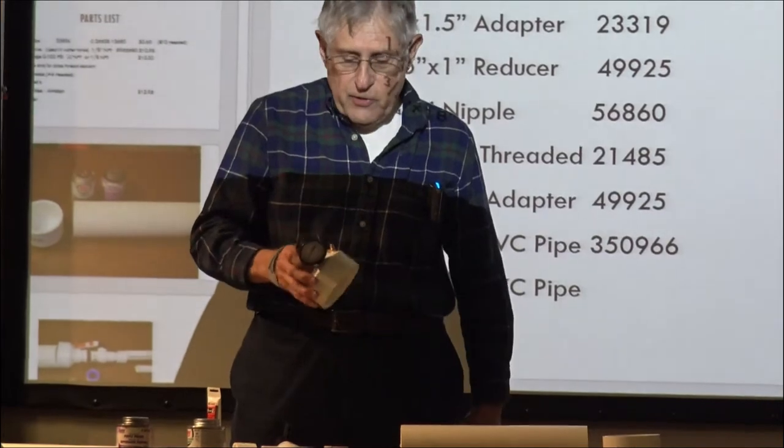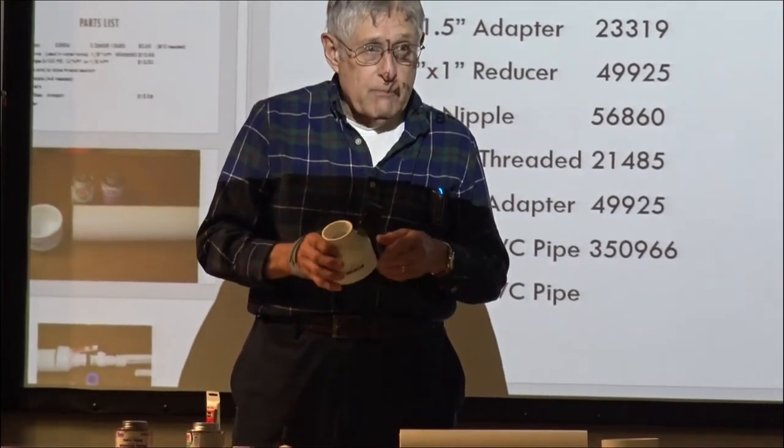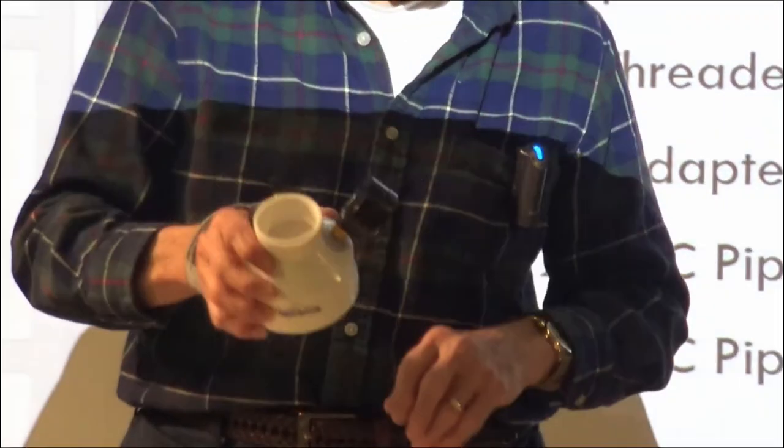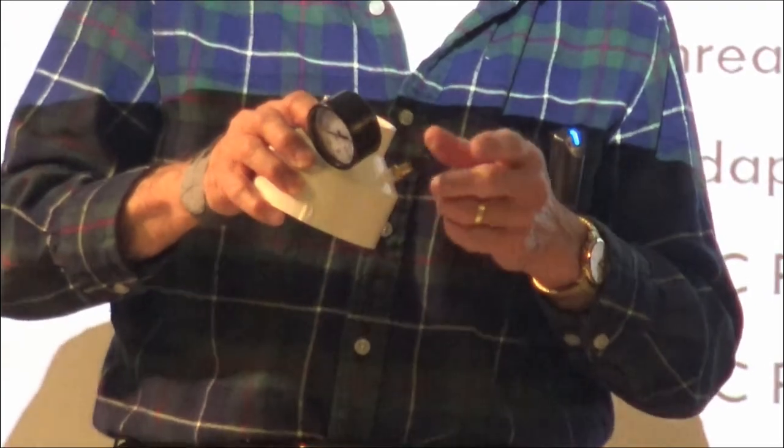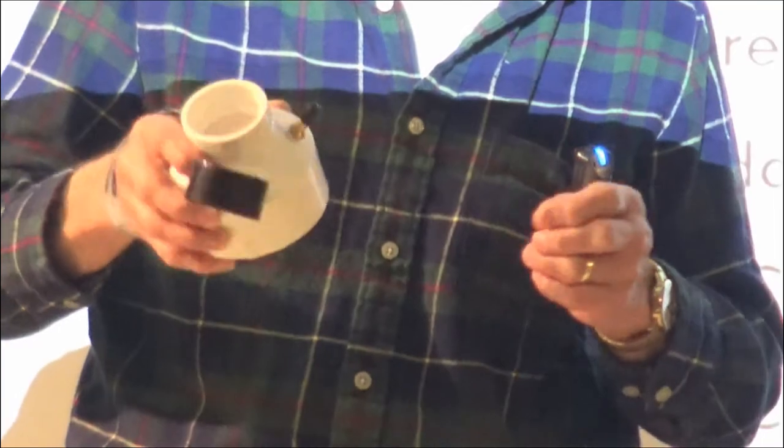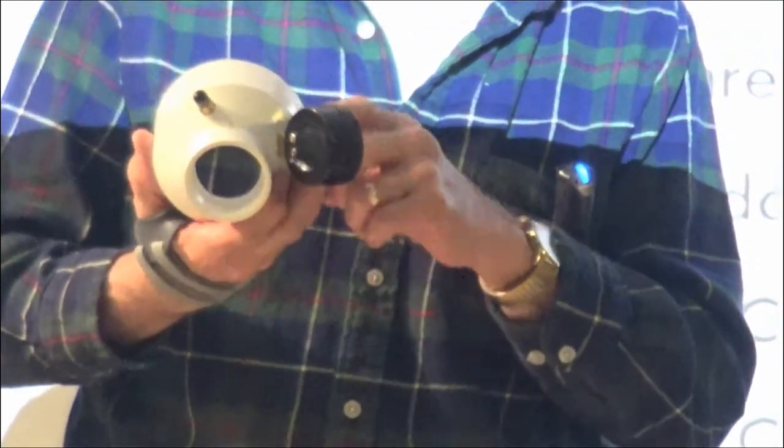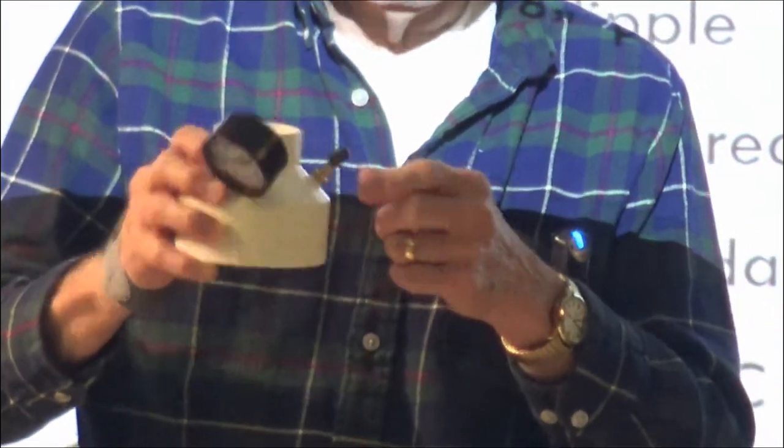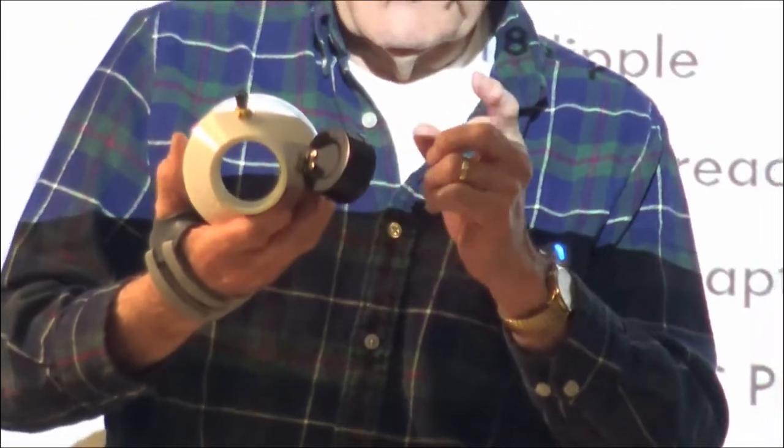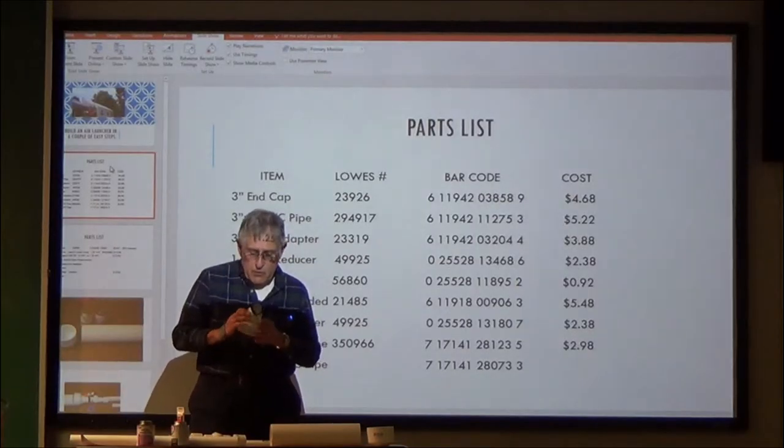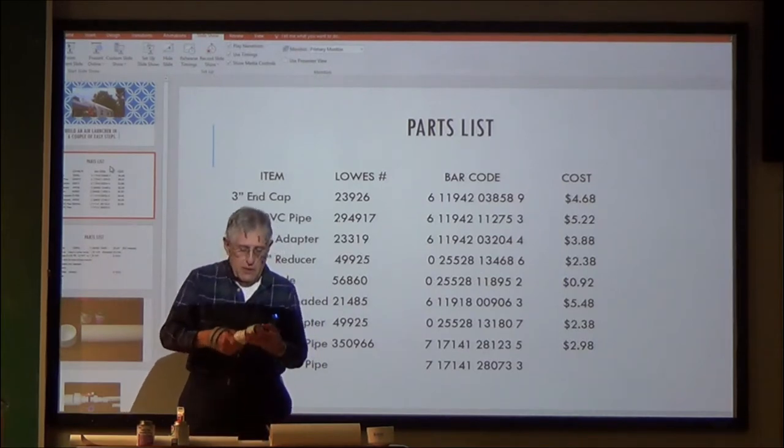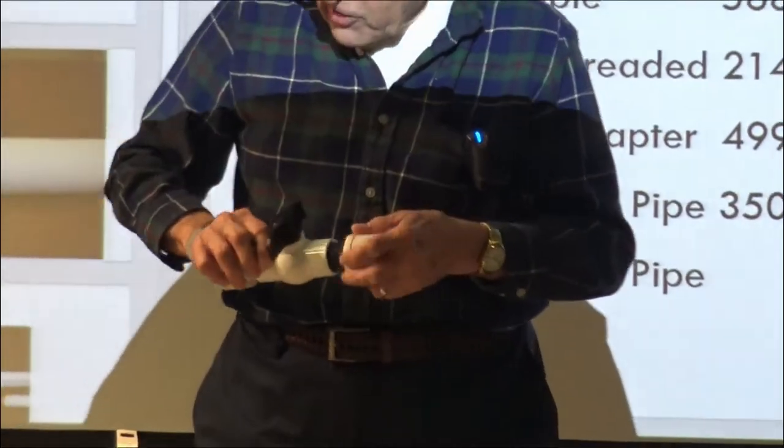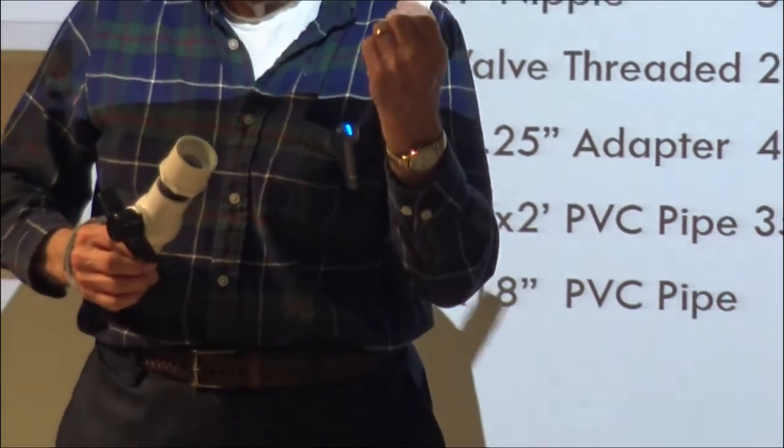You need an end cap to seal the end. You need an adapter to go from 3-inch to 1.5 inches. The air valve is the same air valve that you'll have on a pump pressure tank. It's a quarter-inch pipe thread. The pressure gauge is a quarter-inch. I haven't had any problems with Teflon tape on those leaking. I have had problems with Teflon tape leaking on the coupling, and in that case I used the compound and it cured it.